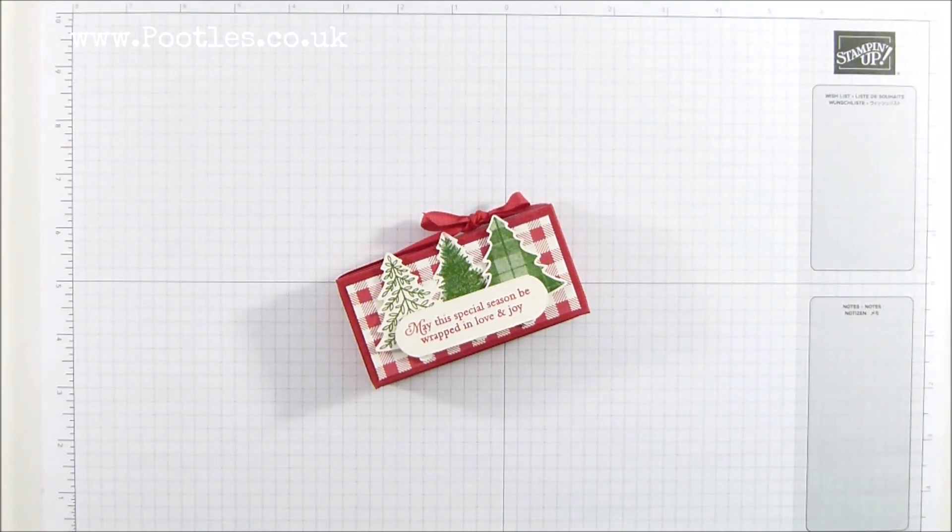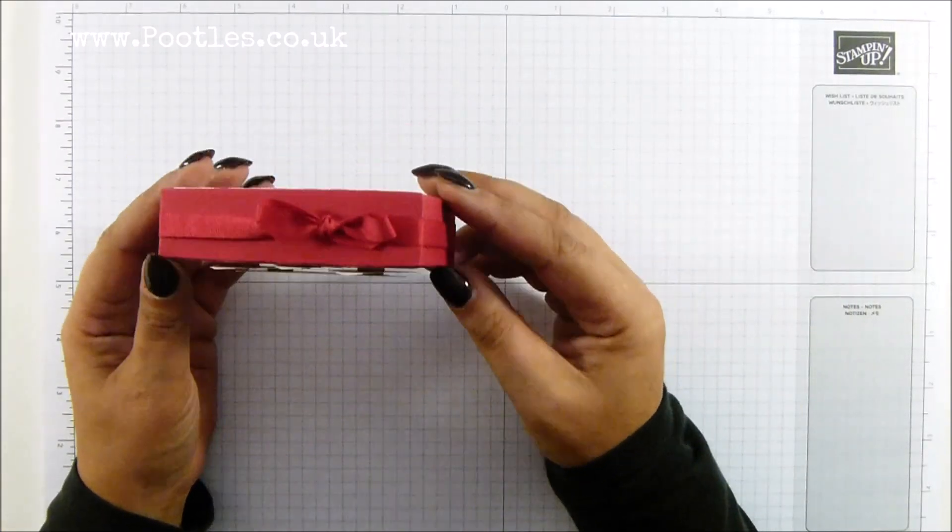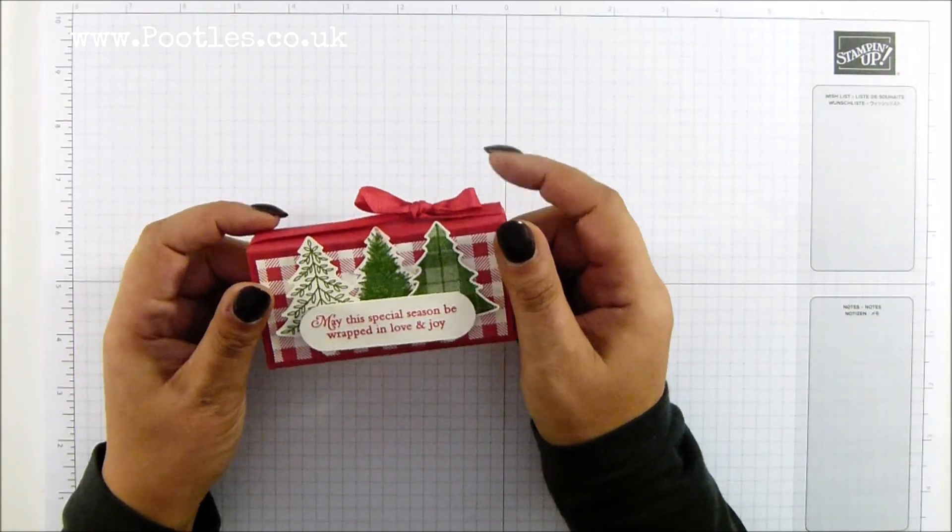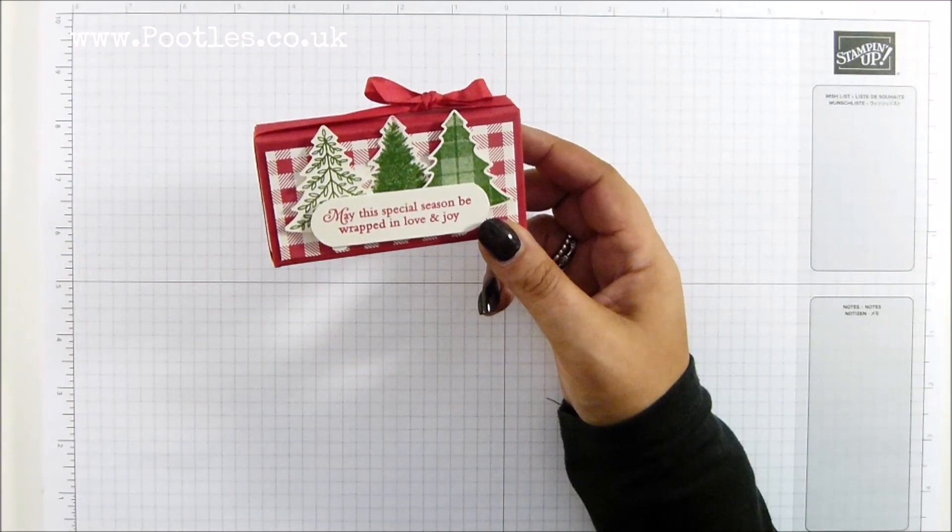Hi there, it's Sam from Pootles.co.uk. Thank you very much for joining me today. Today's project is this one. We have got the autumn winter catalogue launching very soon on 4th of September. Very excited about that, so I thought I would at long last show you some bits.